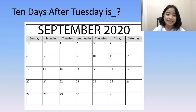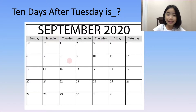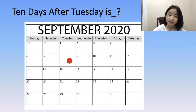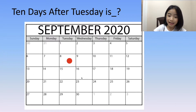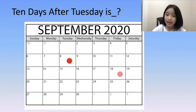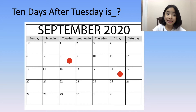So here is our calendar. Let's use September 8th as our Tuesday. Let's count 10 days from September 8th: 1, 2, 3, 4, 5, 6, 7, 8, 9, 10. And we get to September 18th on Friday. So we have our answer — 10 days after Tuesday is Friday.